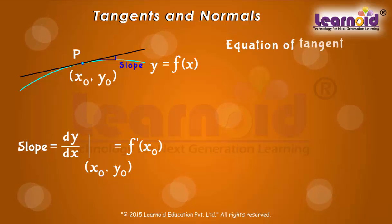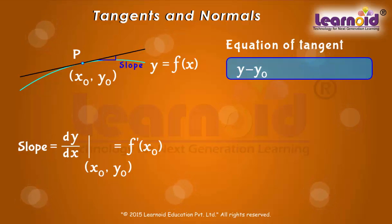So the equation of the tangent at (x₀, y₀) to the curve y = f(x) is given by y - y₀ = f'(x₀)(x - x₀).